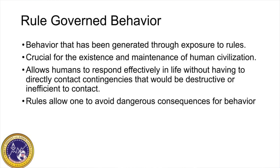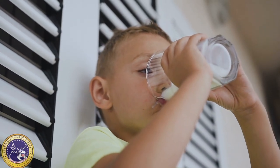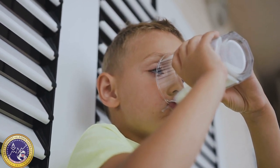Rule-governed behaviors are behaviors that have been generated through exposure to rules. They're crucial for the existence and maintenance of human civilization. Although humans respond effectively to life without having direct contact with contingencies, that would be destructive and an inefficient way to contact reinforcement and punishment contingencies. Rules also allow us to avoid dangerous consequences, such as the rule 'look both ways before you cross the street.' For example, the rule 'if you drink spoiled milk you'll get sick' — you don't necessarily have to experience a contingency in order to adhere to this rule.